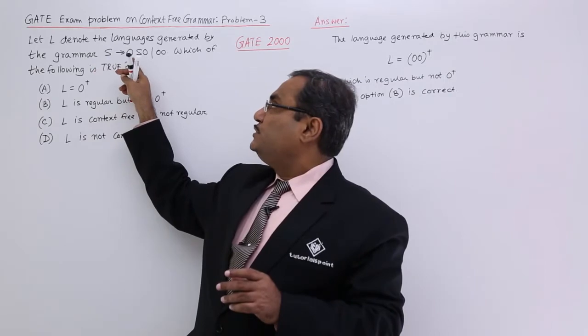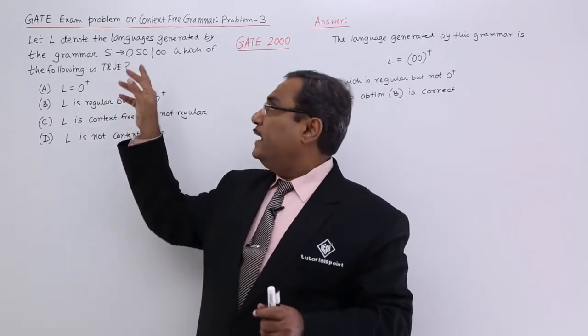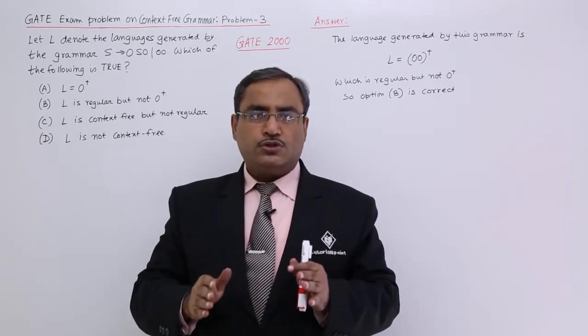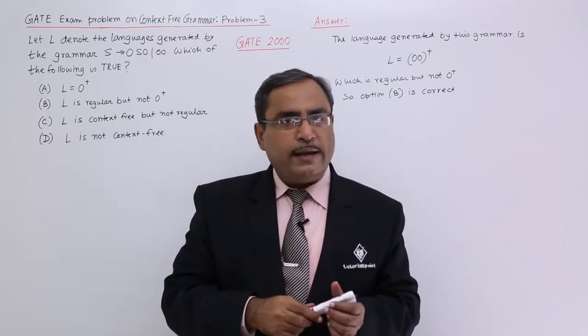If you produce S → 0S0, then that S will be replaced by another two zeros, then it becomes four zeros. So always zeros will be an even number.